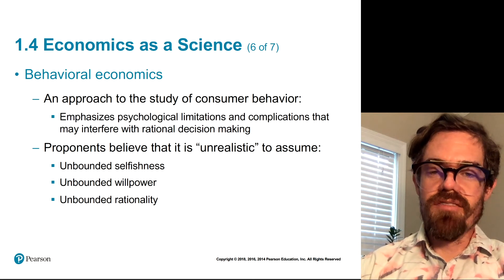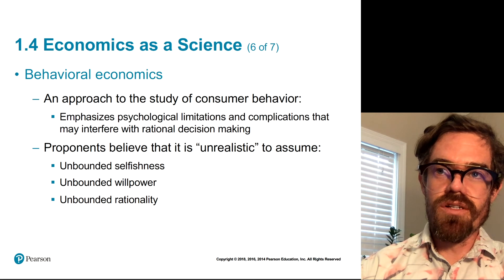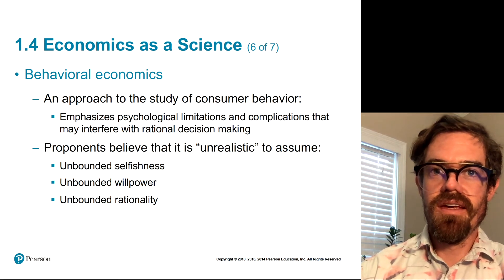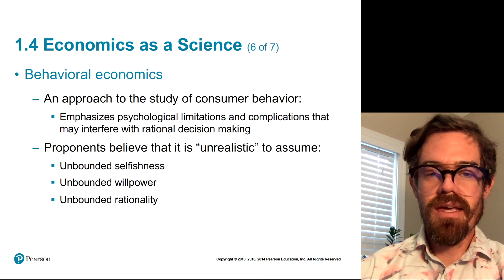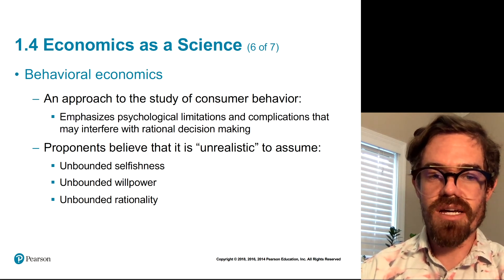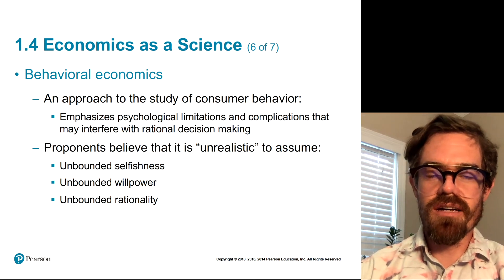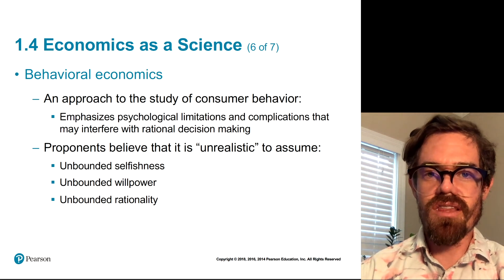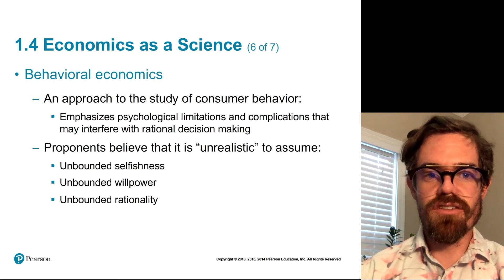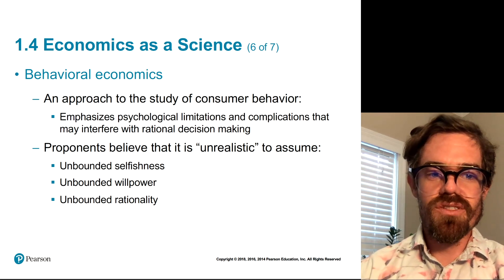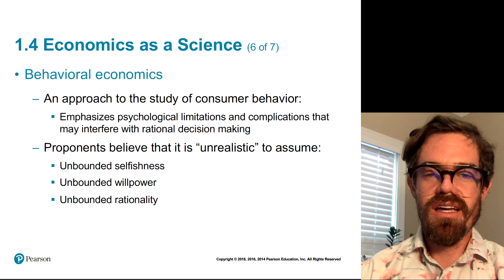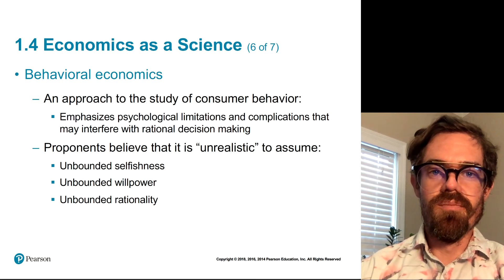Throughout the term we'll look at behavioral economics examples, one of the branches of economics at the forefront of the science. It's basically an approach to studying behavior — not just consumer behavior but also firm behavior and other types. The key aspect of behavioral economics is that it focuses on the psychological limitations that decision makers may face and how these limitations might interfere with rational, self-interested decision making. Proponents of behavioral economics believe it's unrealistic to assume that we are unboundedly selfish — we give to charity and to homeless people, so we're not entirely selfish beings.